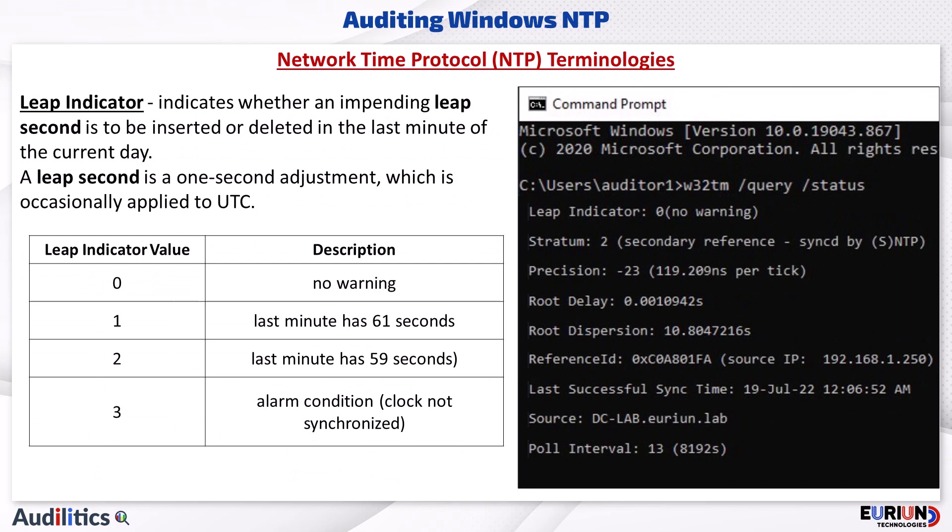Leap Indicator. The leap indicator specifies whether an impending leap second is to be inserted or deleted in the last minute of the current day. A leap second is a one-second adjustment which is occasionally applied to Coordinated Universal Time, or UTC. A description of each leap indicator value is described below.